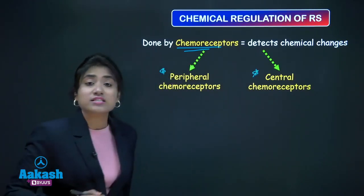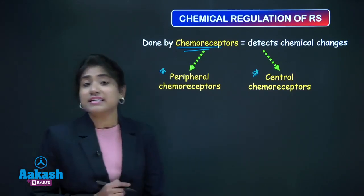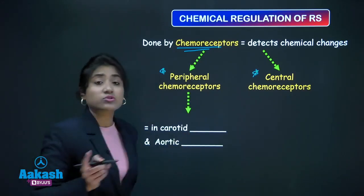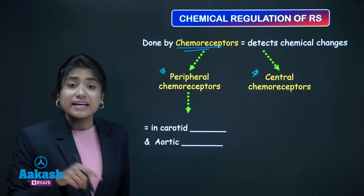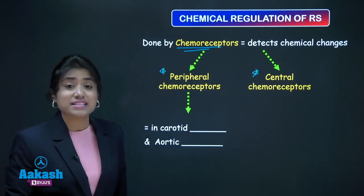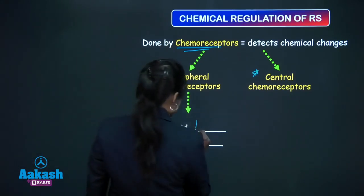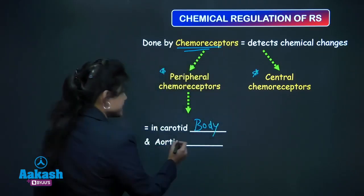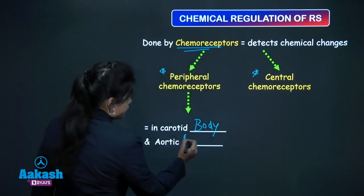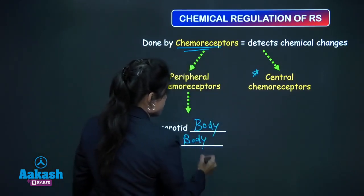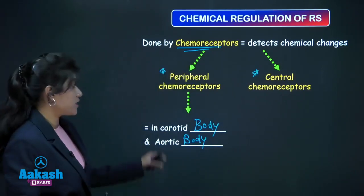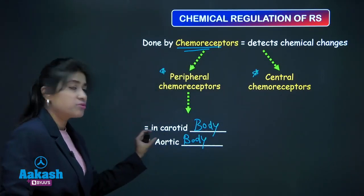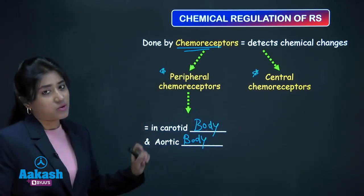Peripheral chemoreceptors are present in the carotid body and aortic body. Note it is carotid body — not carotid sinus.